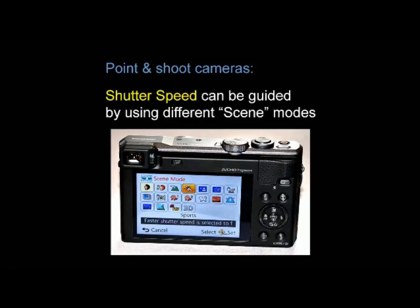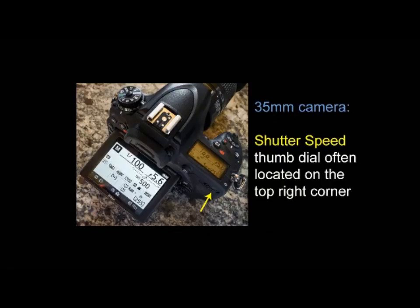Some point-and-shoot cameras have manual mode, but most have scene modes instead. If you look at the scenes available on screen, there's one with a guy in motion — the runner again. That's your high shutter speed mode on a point-and-shoot camera. A DSLR — a digital 35-millimeter camera — typically has a thumb dial that turns the shutter speed up and down. I have a dial but I don't think I've ever touched it. I go into the manual settings and set it there, but the dial would be much quicker — it's instantaneous.